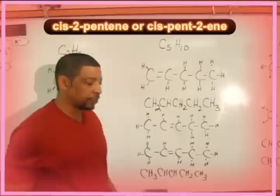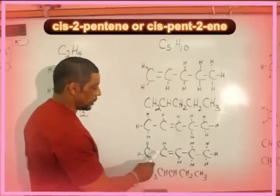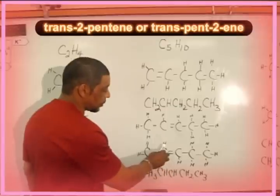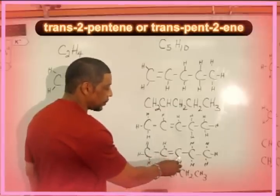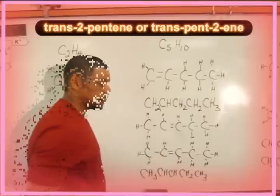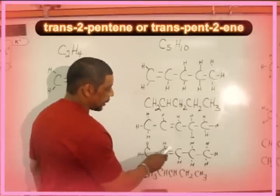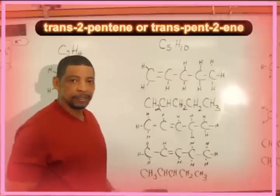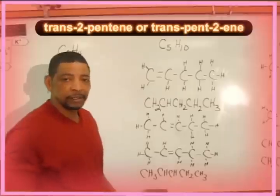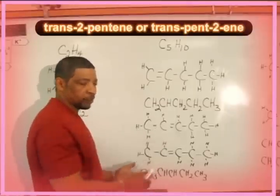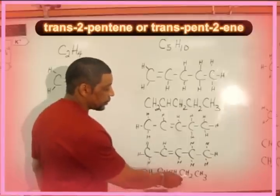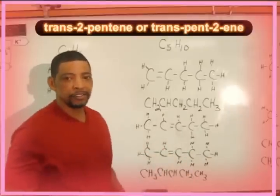A geometric isomer of cis-2-pentene would be trans-2-pentene. The term trans implies that the hydrogens on carbon 2 and carbon 3 are written opposite — on different sides of the carbon chain. So the proper name for this compound would be trans-2-pentene. To write the condensed formula for both cis and trans-2-pentene, simply copy either structural formula: CH3, CH, CH, CH2, and CH3.